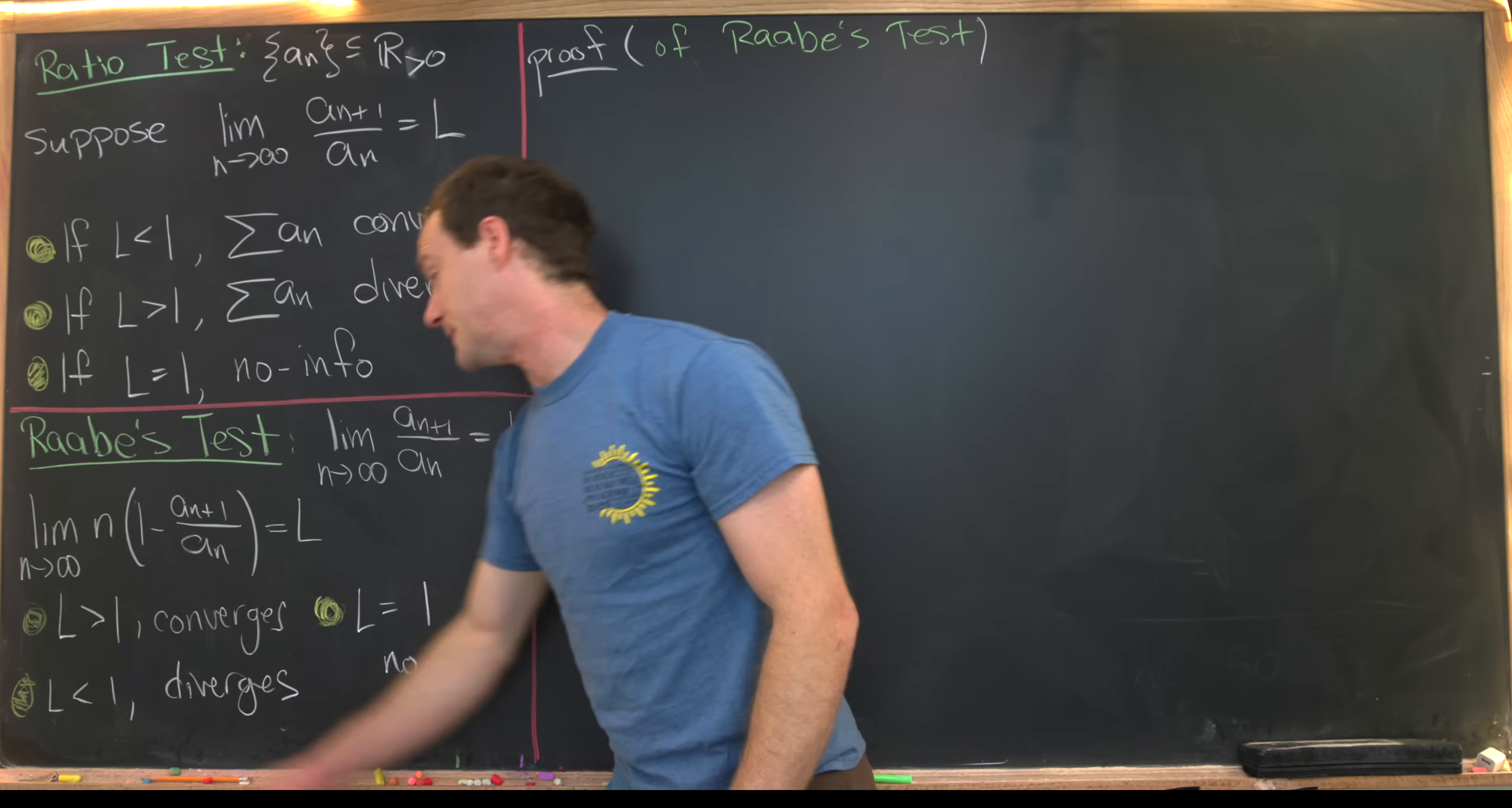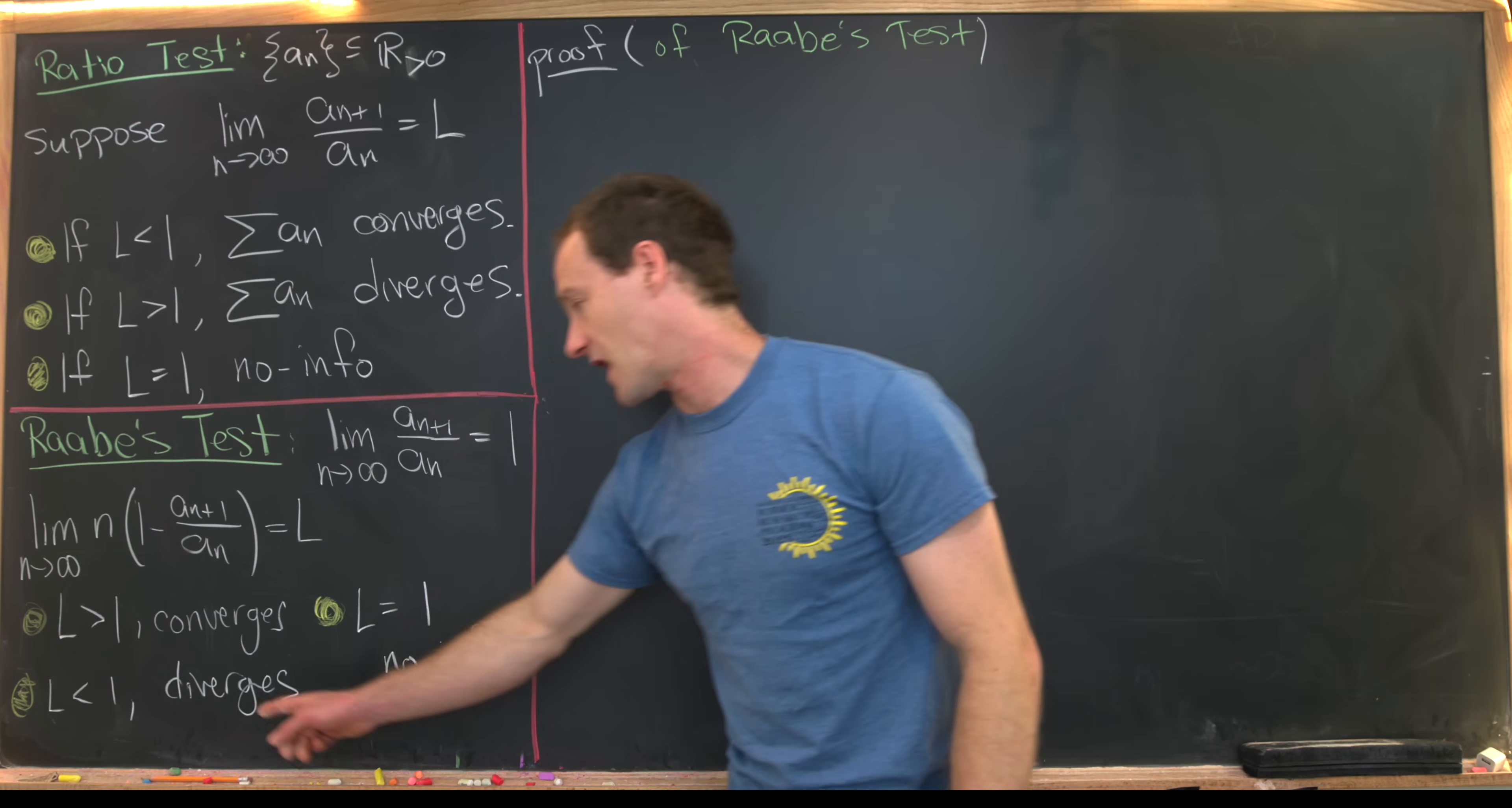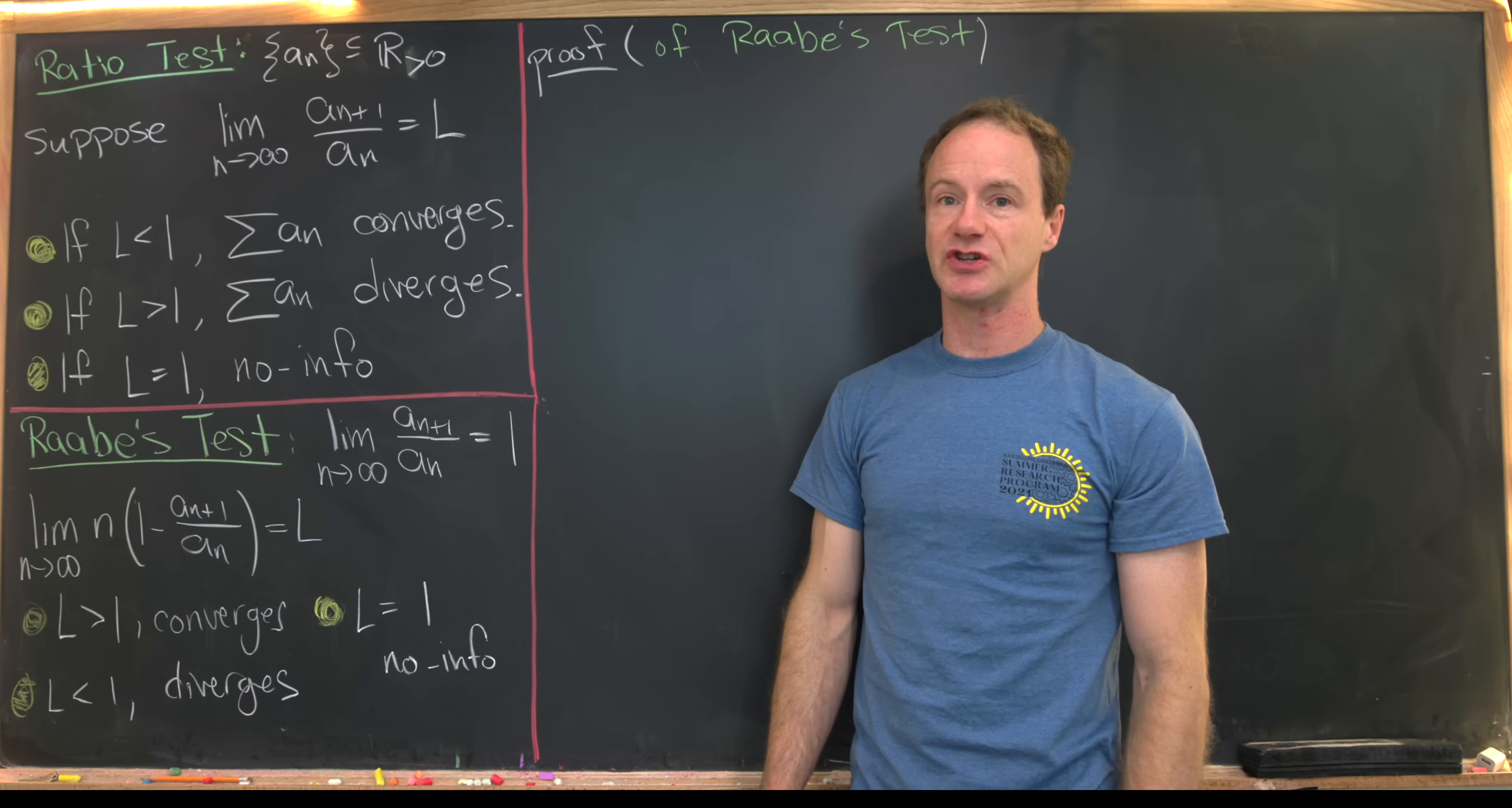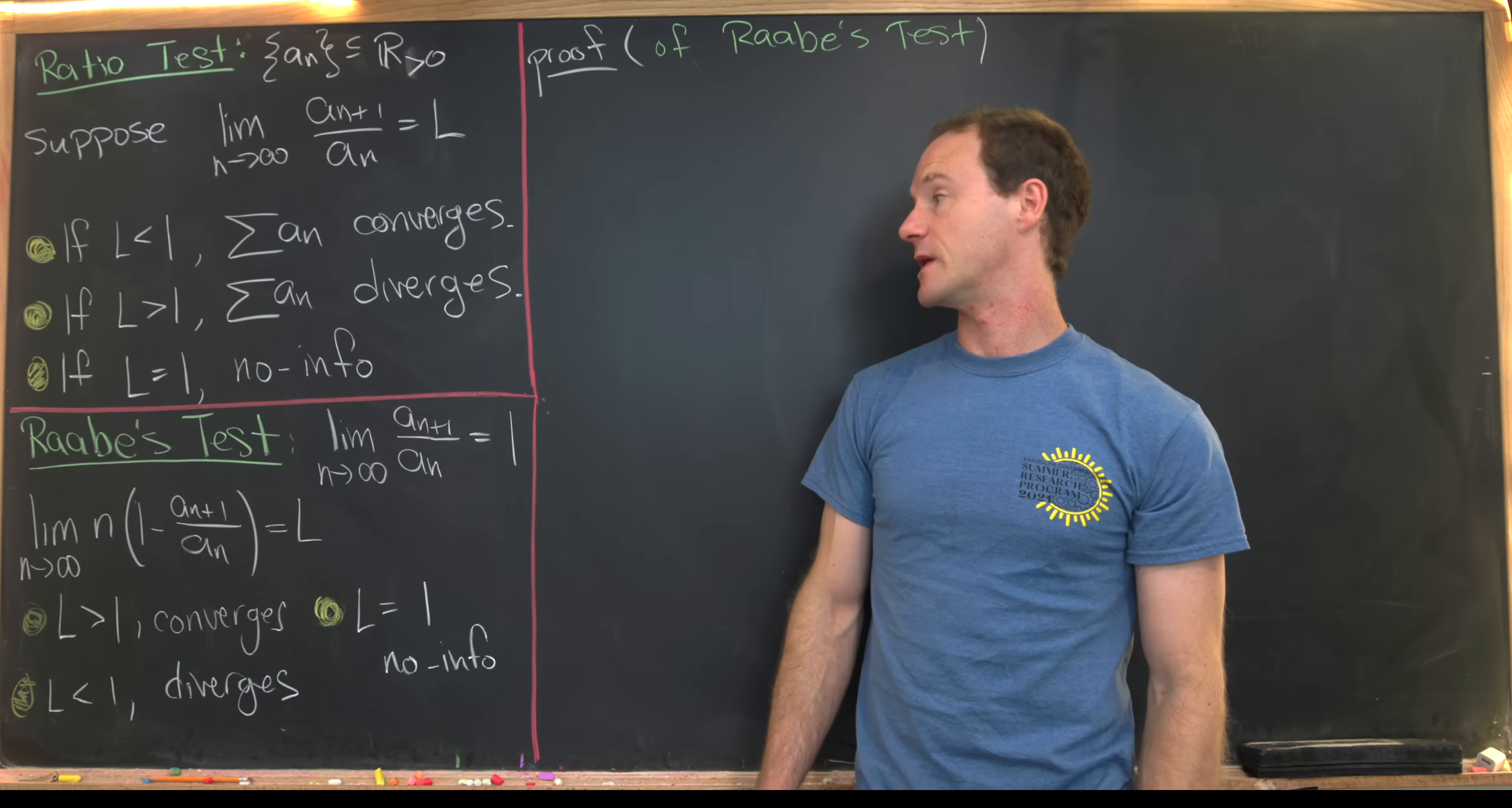Now if L is bigger than 1, our original series converges. If L is less than 1, it diverges. And if L equals 1, well then you're unlucky again and we get no information.